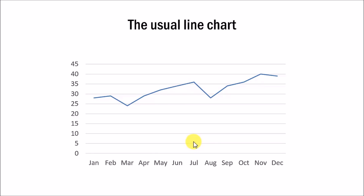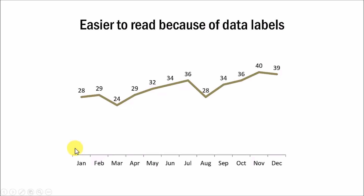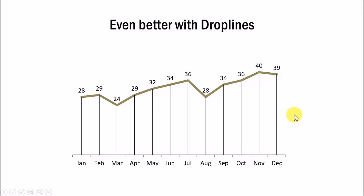The usual books or courses teach you how to create a line chart like this. Though the chart looks fine, the problem is your audience needs to refer to two different axes to read the values for each of the months — that is quite tiresome. You can make their life easier by adding data labels so they don't have to refer to the vertical axis anymore. This is a far easier chart to read, but there is still a bit of difficulty matching the data point with the right month in the horizontal axis. We can solve that issue by adding a drop line like this.